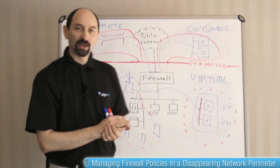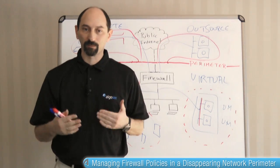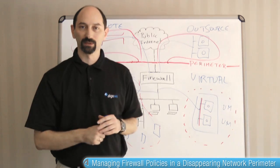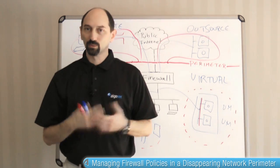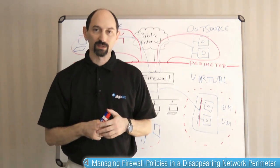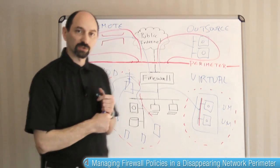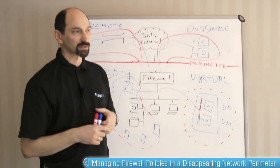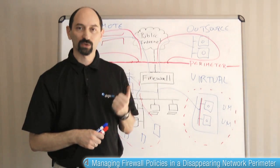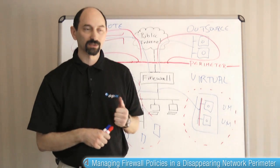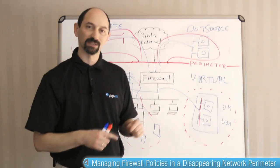Luckily, we have some technological developments that help us regain control of the disappearing network perimeter. There are two technologies to consider. One is next generation firewalls. Next generation firewalls do two things for us: first, they let us filter traffic not only based on ports and protocols but also based on the application that is being used.